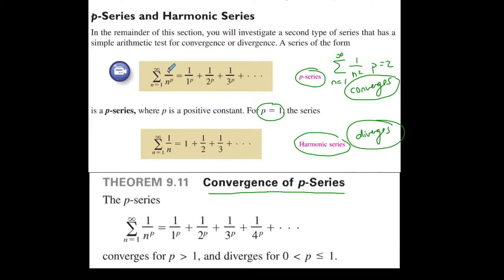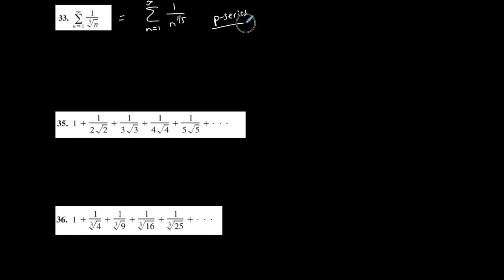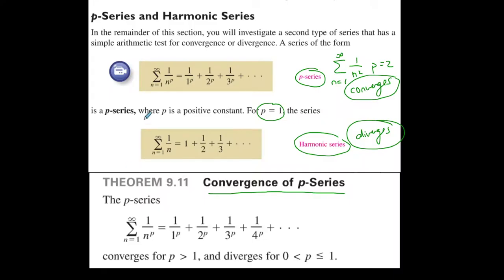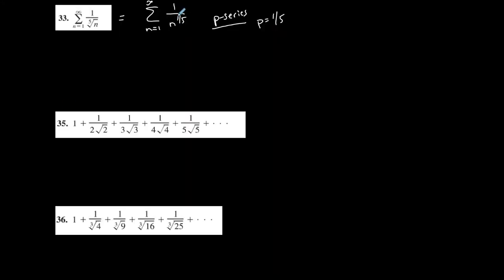First things first, I'm going to rewrite this as 1 over n to the 1/5, which I can do because the 5th root of n is the same thing as n to the 1/5. If you compare this to 1 over n to the p, in this case the number is 1/5, so this is a p-series where p is equal to 1/5.